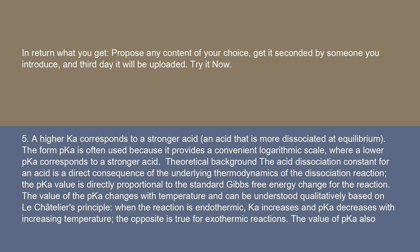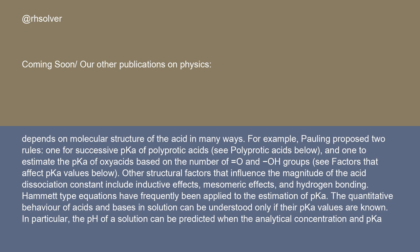The value of pKa also depends on molecular structure of the acid in many ways. For example, Pauling proposed two rules: one for successive pKa of polyprotic acids (see polyprotic acids below), and one to estimate the pKa of oxyacids based on the number of =O and -OH groups (see factors that affect pKa values below). Other structural factors that influence the magnitude of the acid dissociation constant include inductive effects, mesomeric effects, and hydrogen bonding.